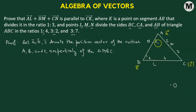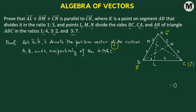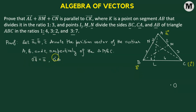What we'll do is join AL, BM, and CN. So we have the segments AL, BM, and CN. Now, before proceeding forward, we have already mentioned that vector A, vector B, and vector C represent the position vectors of the vertices A, B, and C of triangle ABC. This means OA vector corresponds to vector A, OB vector to vector B, and OC vector to vector C. We'll label this as number 1.